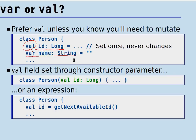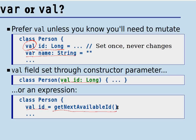The only decision you need to make with a val is that it needs to be set exactly once. There are two possibilities: you can make it a parameter of the primary constructor, so the user of the class must supply it when constructing an object. Alternatively, the val can become a field defined inside the class, but then it needs to be initialized with some expression — you only have one chance, and it must be right there. For instance, the expression might call some method that doles out ID numbers.